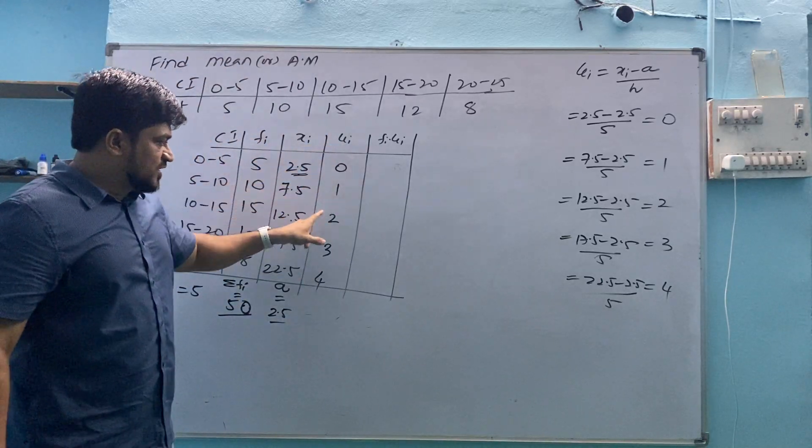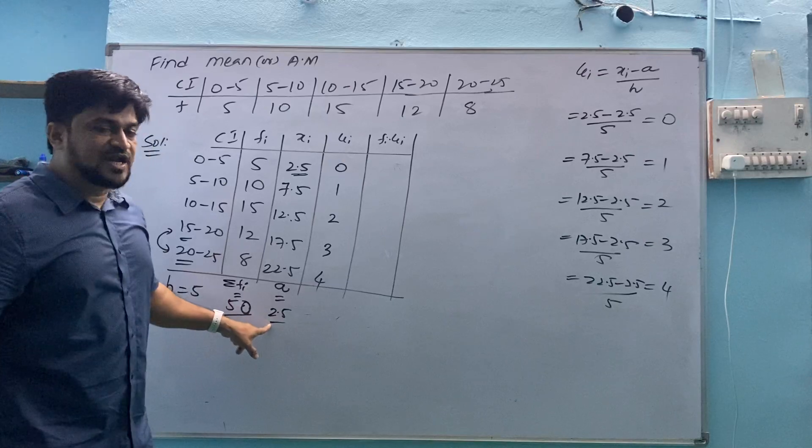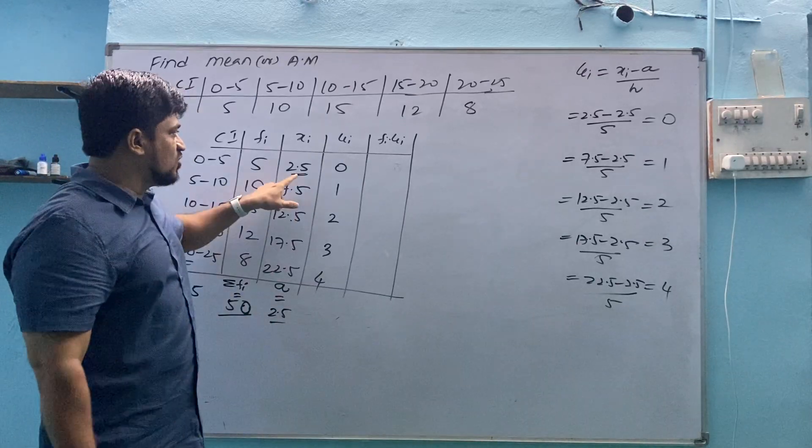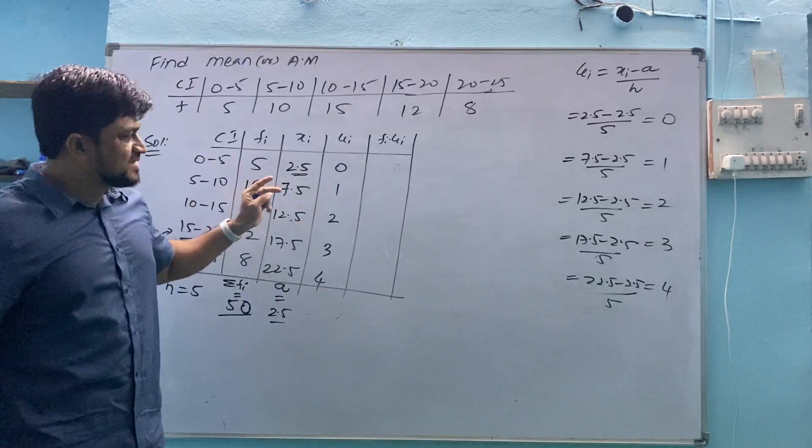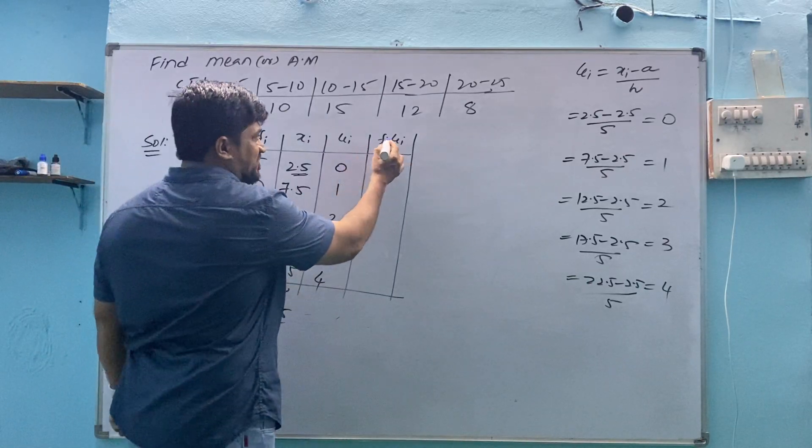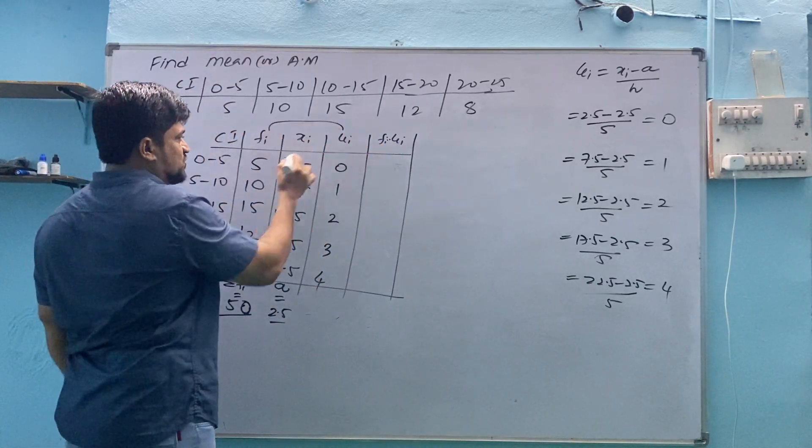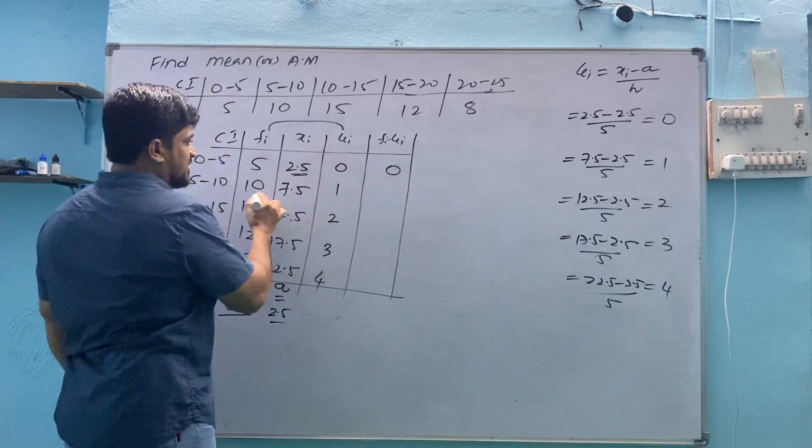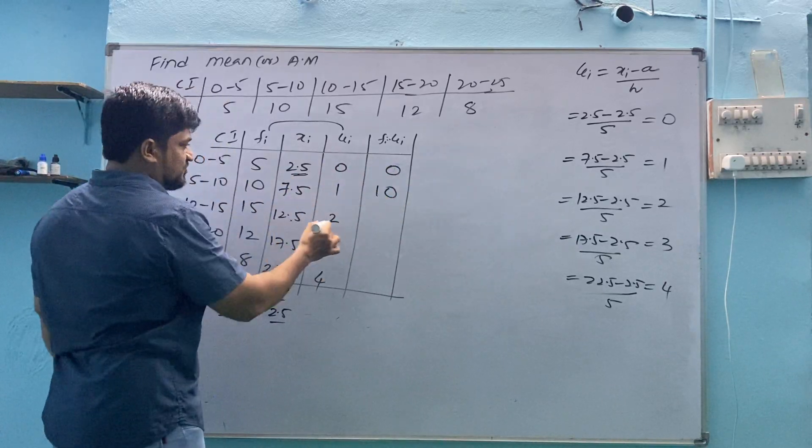Or in simple words, Ui is 0, 1, 2, 3, 4. From where we are getting this A? A is first value of Xi. These are the two things which you need to remember. Remaining things are Fi and Ui, just multiply these two. 5 into 0 is 0, 10 into 1 is 10, 15 into 2 is 30.